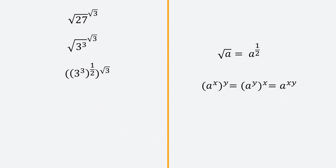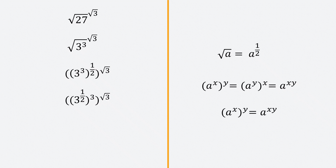Now we can apply the rule which tells us if you have a power raised to another power, we can multiply the exponents: a to the power x to the power y equals a to the power x times y. So at this point, 3 cubed to the power half — I can interchange and get 3 to the power half, cubed. And now 3 and the root 3 can be multiplied, giving 3 to the power half to the power 3 root 3.